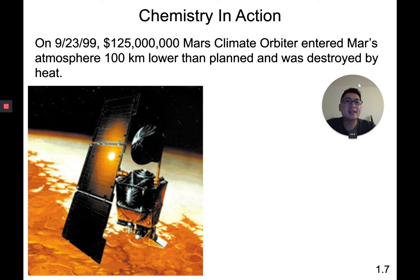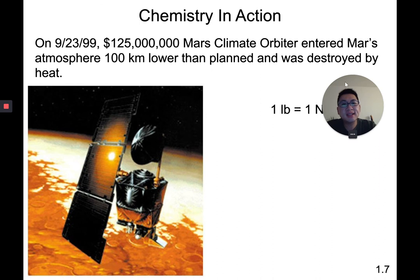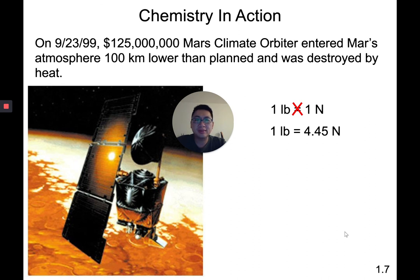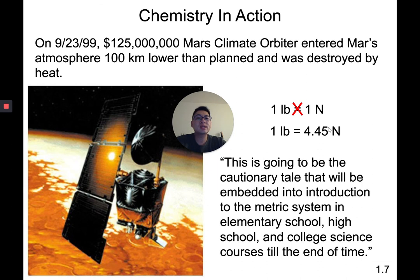Why does unit conversion matter? In 1999, a $125 million Mars Climate Orbiter was destroyed entering Mars's atmosphere 100 km lower than planned because one scientist used pounds while another used newtons — they are not the same. One pound is approximately 4.45 newtons. Because of that mistake, the NASA director said this would become a cautionary tale embedded in the introduction of the metric system in science courses forever. We need to be able to convert between all these different units.